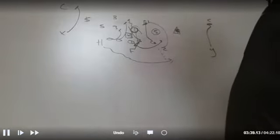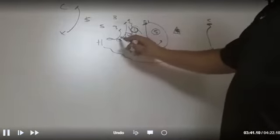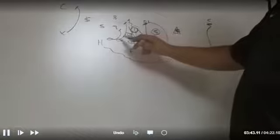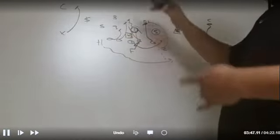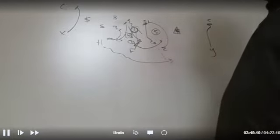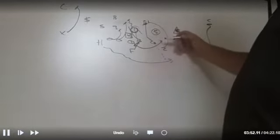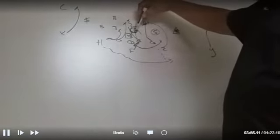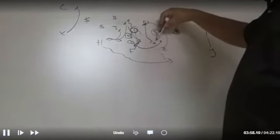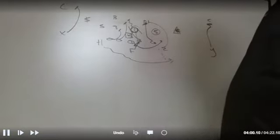Offensive line-wise, we got a scoop scheme between the backside guard and backside tackle. You guys are scooping your playside gap up to the linebacker. Over here on the playside, we got an ace combination ball between the center and the guard. And the playside tackle is veer-releasing inside up to the backer.